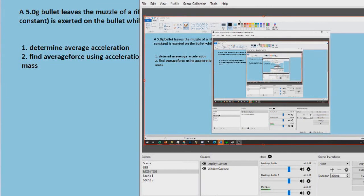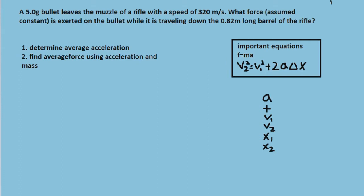Okay, so here we have a problem which says a 5 gram bullet leaves the muzzle of a rifle with the speed of 320 meters per second. What force assumed constant is exerted on the bullet while it is traveling down the 0.82 meter long barrel of the rifle?